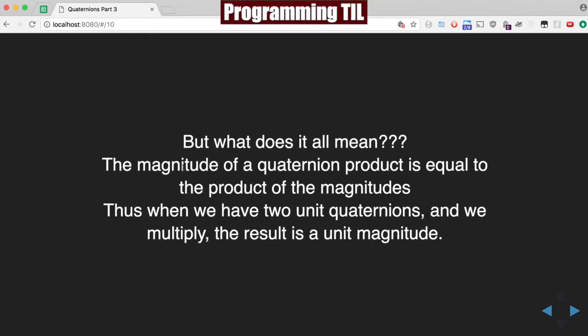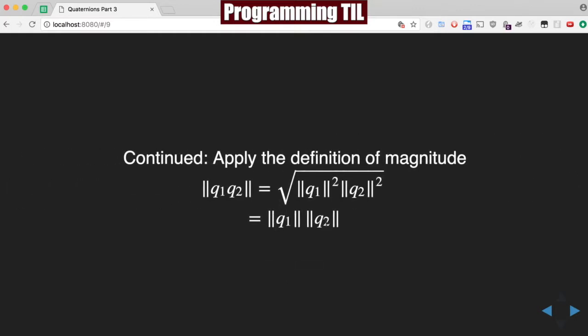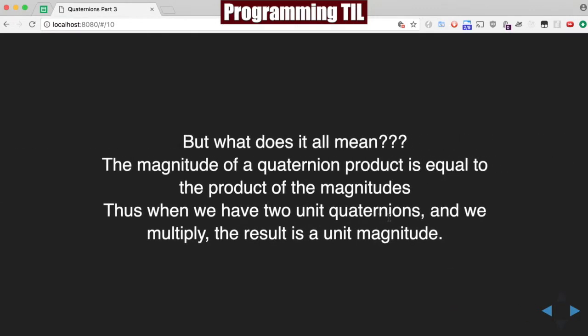So, what does it mean? The magnitude of a quaternion product is equal to the product of the magnitudes. So, there's the magnitude of Q1 and the magnitude of Q2. So, the product of those is the same thing as the magnitude of the quaternion products. So, if we have two unit quaternions, and we multiply, the result is also a unit magnitude. That's important to know and good to remember. Just remember where you are dealing with unit quaternions here.